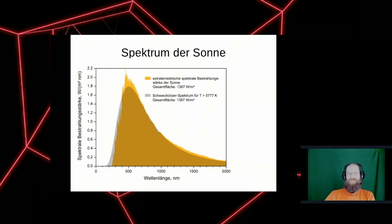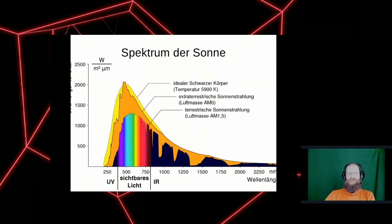If you do the same thing at ground level, you notice that there are certain gaps in the spectrum. These are caused by absorption in the atmosphere. A lot of this is water vapor. And what we are interested in — carbon dioxide — is a bit further to the right in the infrared area.